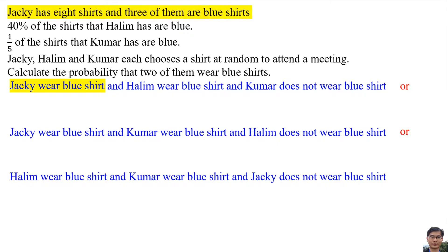Jackie has 8 shirts and 3 of them are blue shirts, so the probability of Jackie wearing a blue shirt is 3 over 8. He has 3 blue shirts and the total number of shirts is 8. 'And' means multiply.